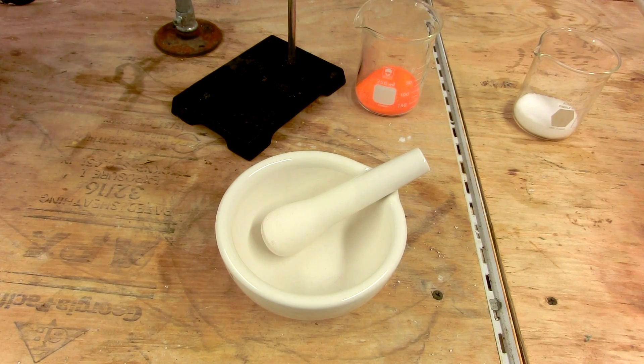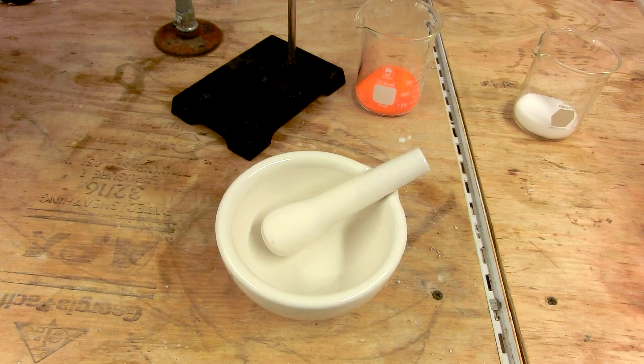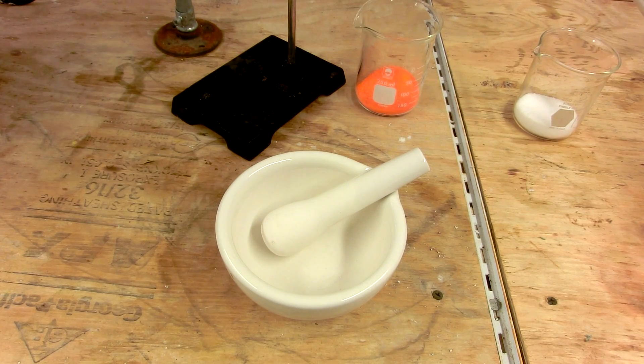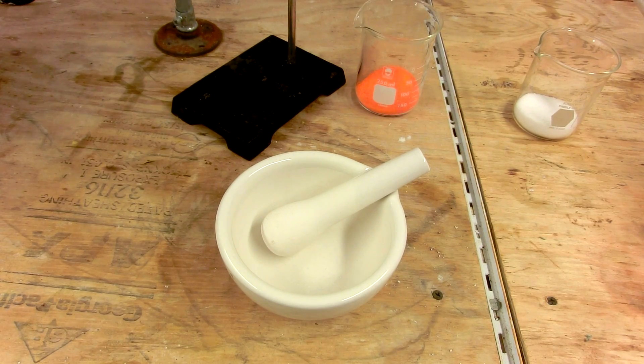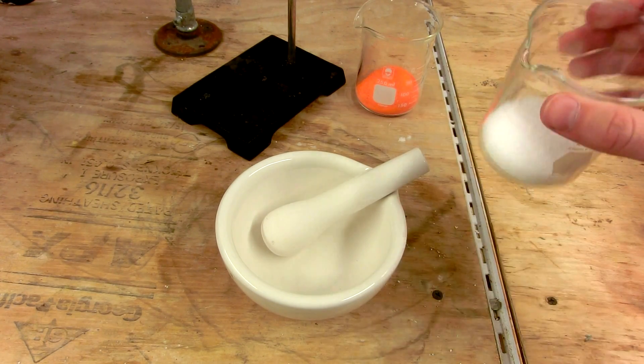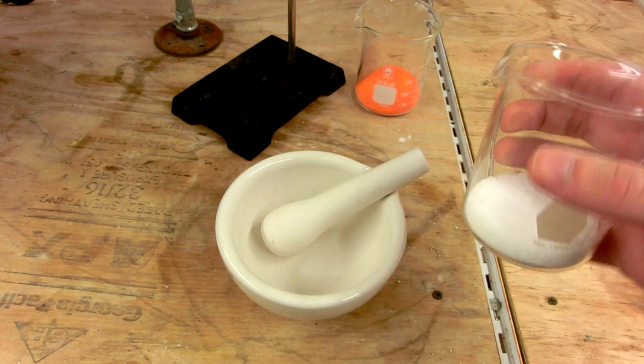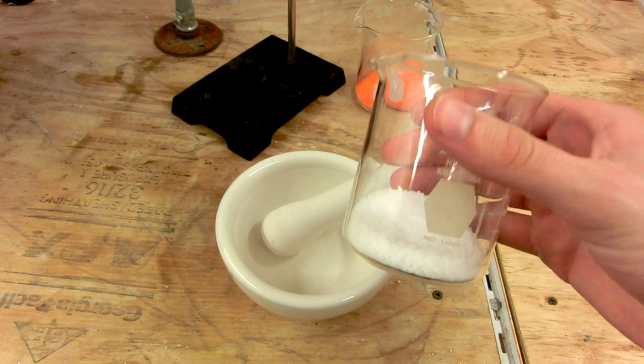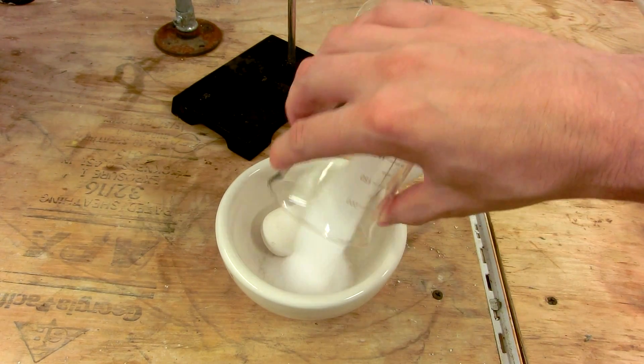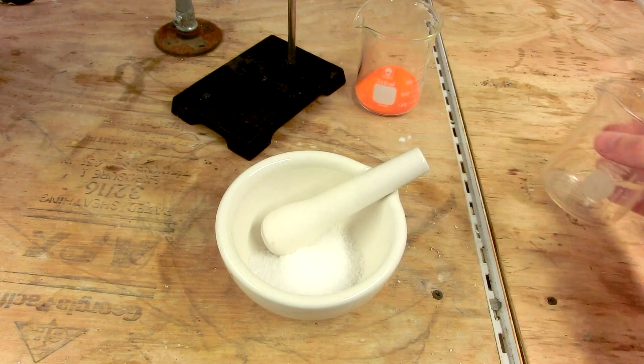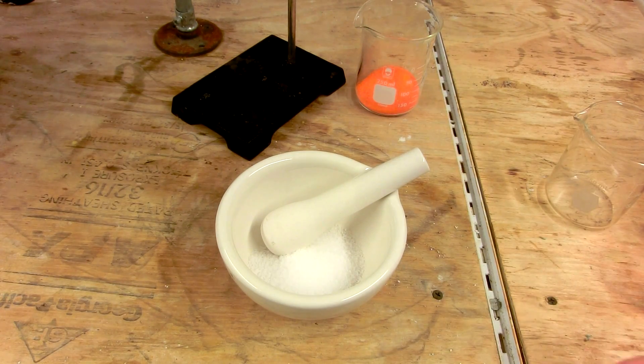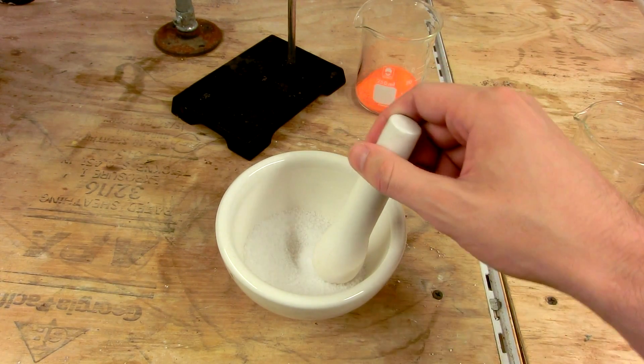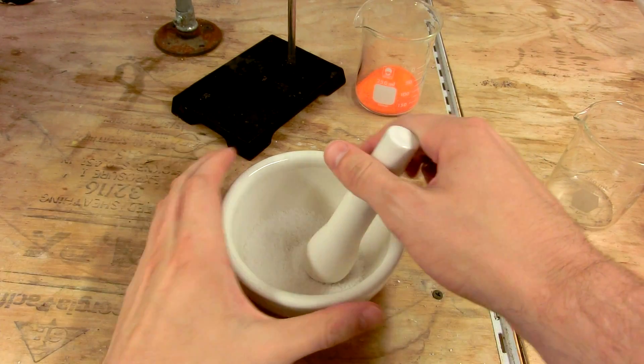Since this reaction requires equilibrium to be achieved before we begin to distill, we need to mix all of the reactants together as thoroughly as possible. So we're going to first measure out 46.75 grams of sodium chloride, non-iodized table salt, and grind it up into as fine a powder as we possibly can. I'm running this on a 1/5th molar scale based on the equation you saw earlier.